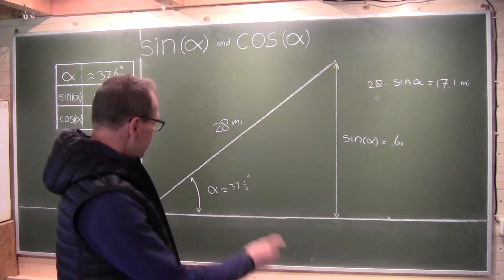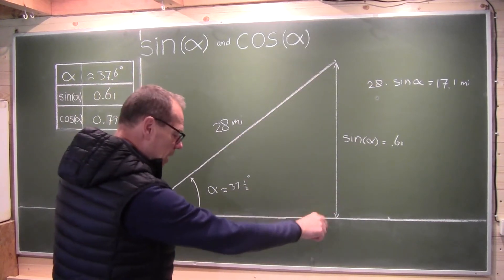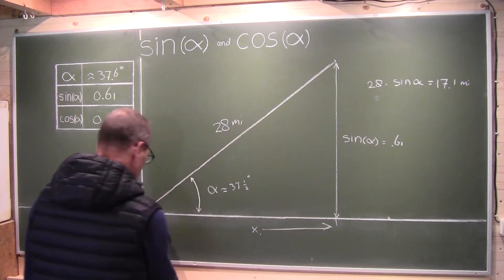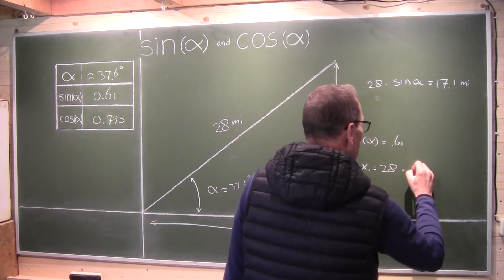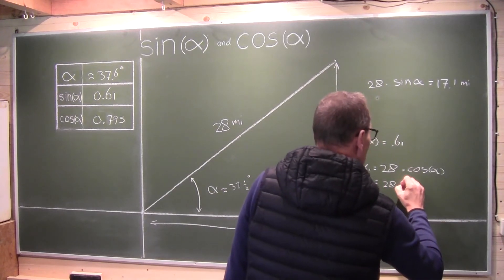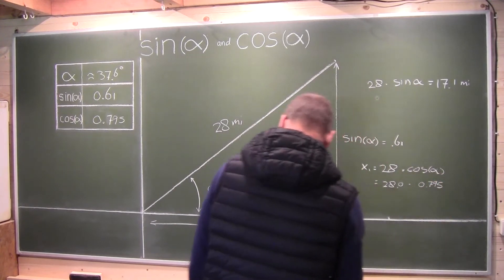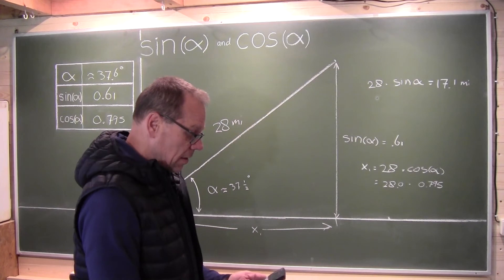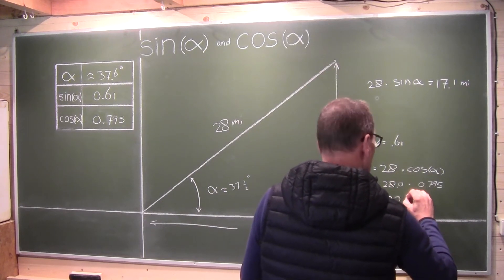Same thing here. If you've moved forward along this line for 28 miles, then you can now determine how much you've moved forward. Because your forward movement x1 equals 28 miles multiplied by the cosine of alpha — that's 28.0 multiplied by 0.795 — equals 22.2 miles.